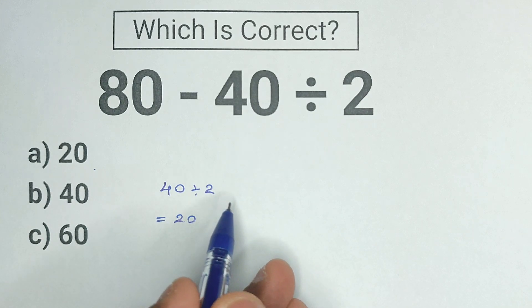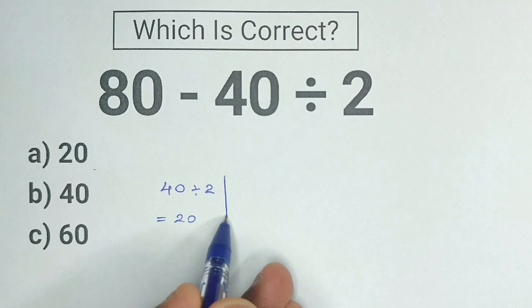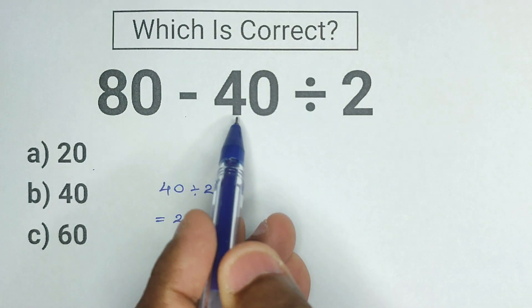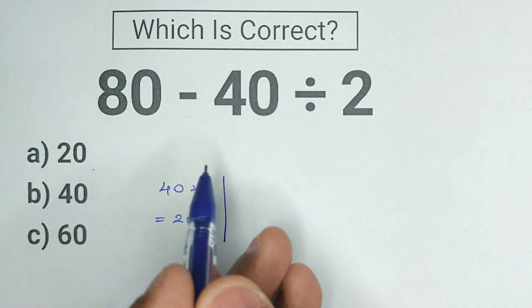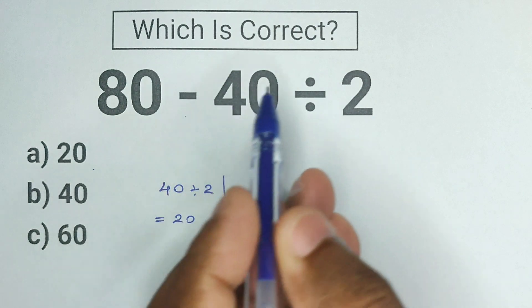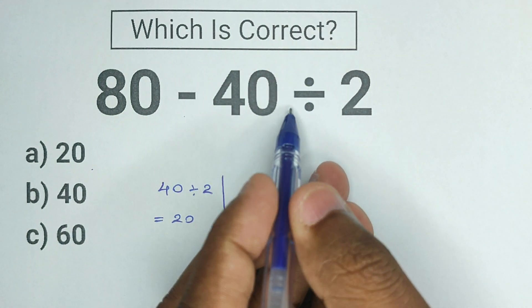Alright, the same problem we are going to do one more time. So we have 80 minus 40 divided by 2. So now instead of doing subtraction first, we are going to do the division first.